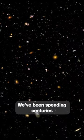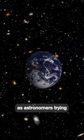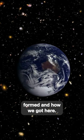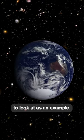Until the 1990s, we didn't know of any planets outside of our solar system. We've been spending centuries as astronomers trying to understand how our planets formed and how we got here, but we had only one system to look at as an example.